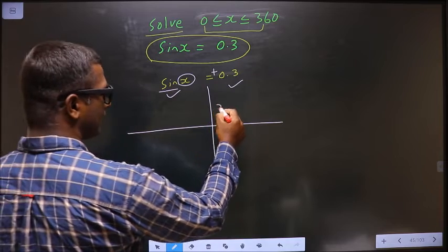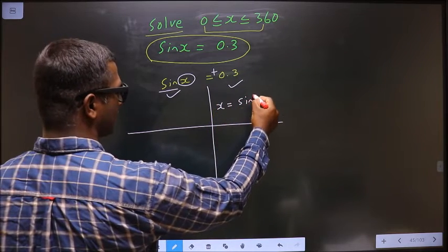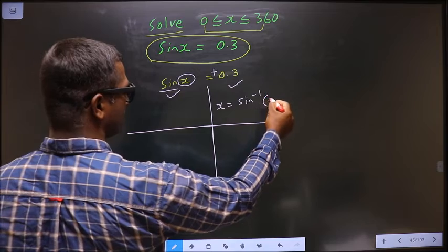So to get an angle in the first quadrant, we do directly sin inverse 0.3.